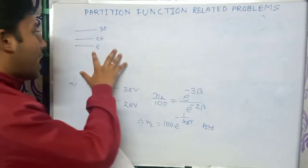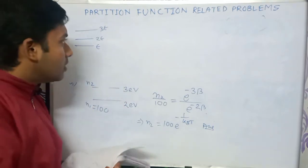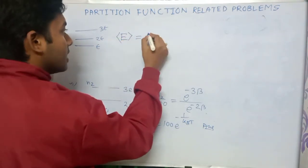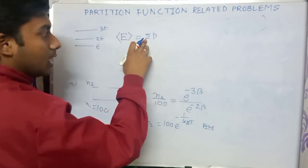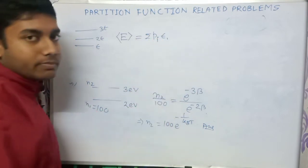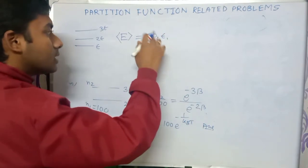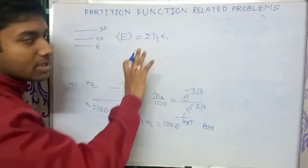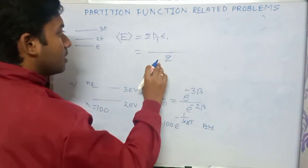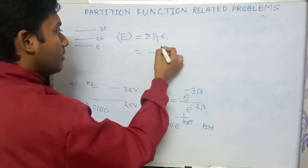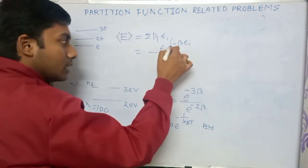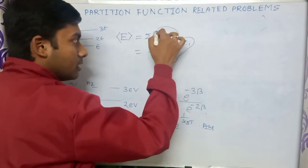If you are asked to find the average energy of this system, similar to quantum mechanics, the average energy is the summation of probability p_i times epsilon_i. For a discrete system, this is the summation of epsilon_i times e to the power minus beta epsilon_i, divided by the partition function z.